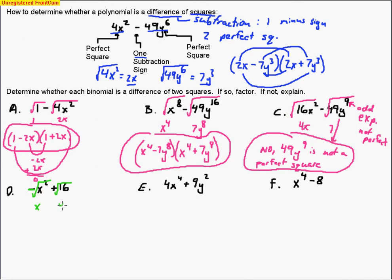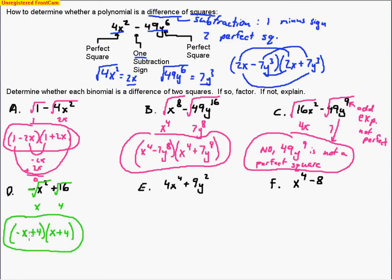For the problem with 16 − x², both terms are perfect squares. If we want to write it with the minus x² first, we'd factor it as (−x + 4)(x + 4), adjusting the signs accordingly. If you wanted to switch the numbers around and put 16 first and x² last, that would be fine as well.